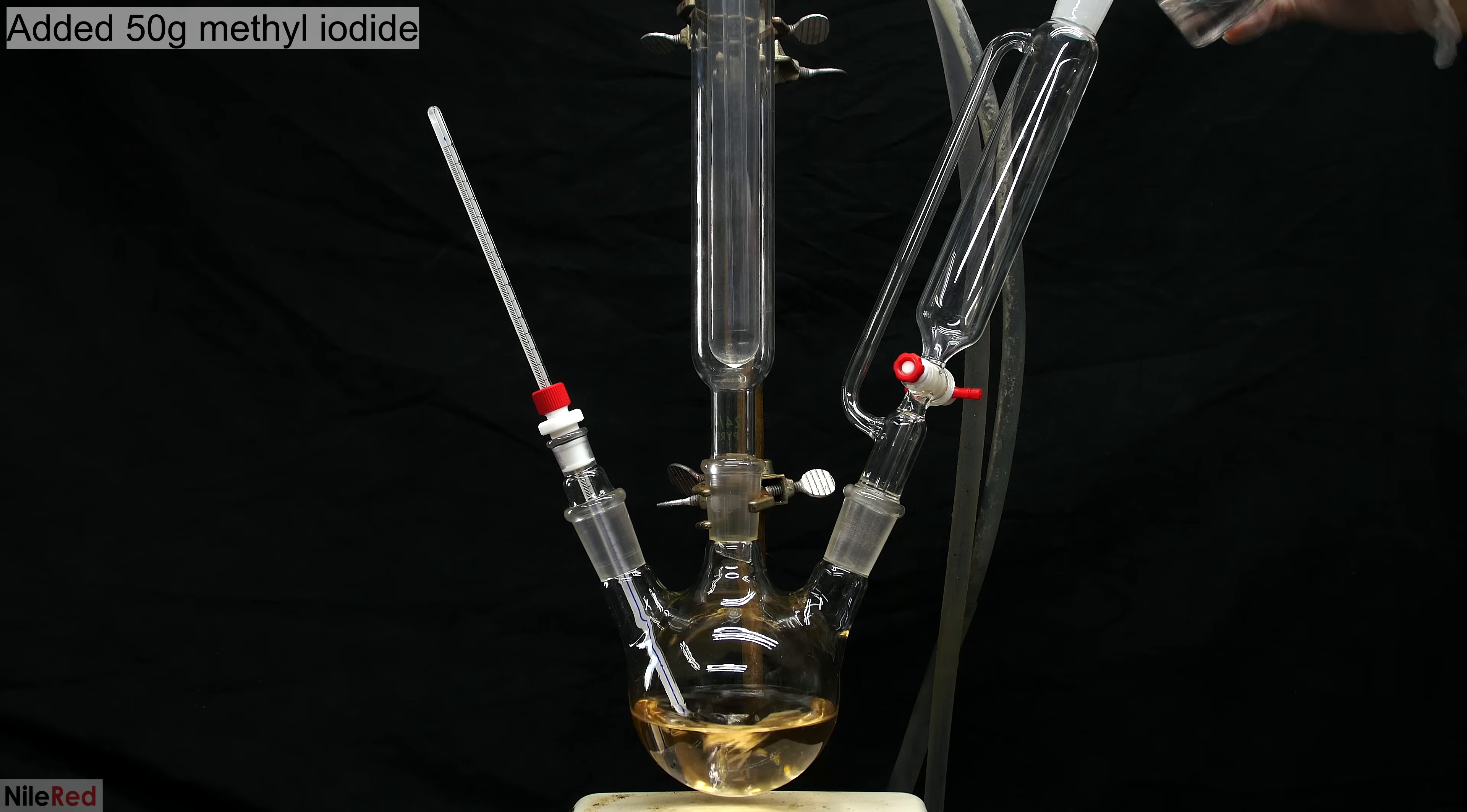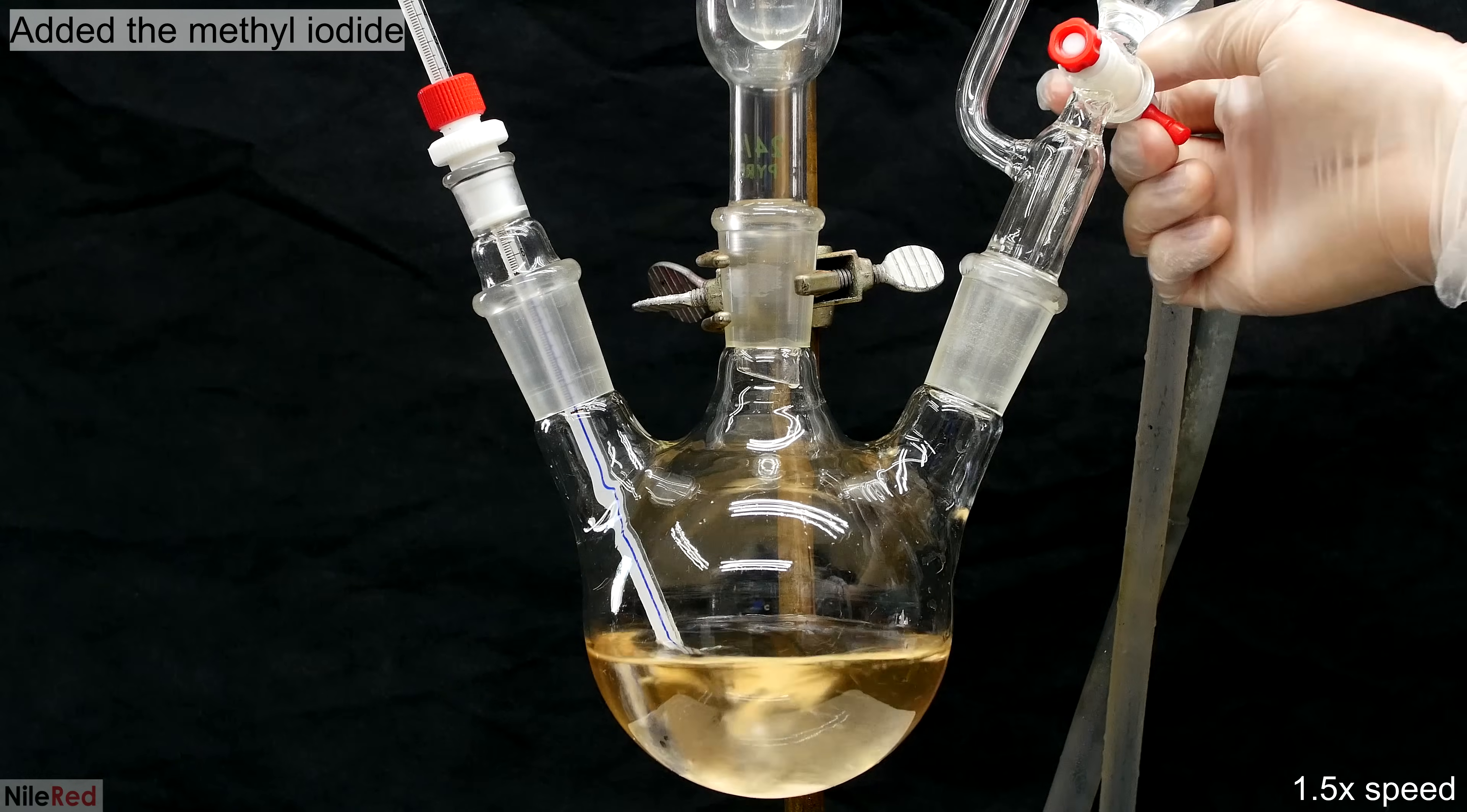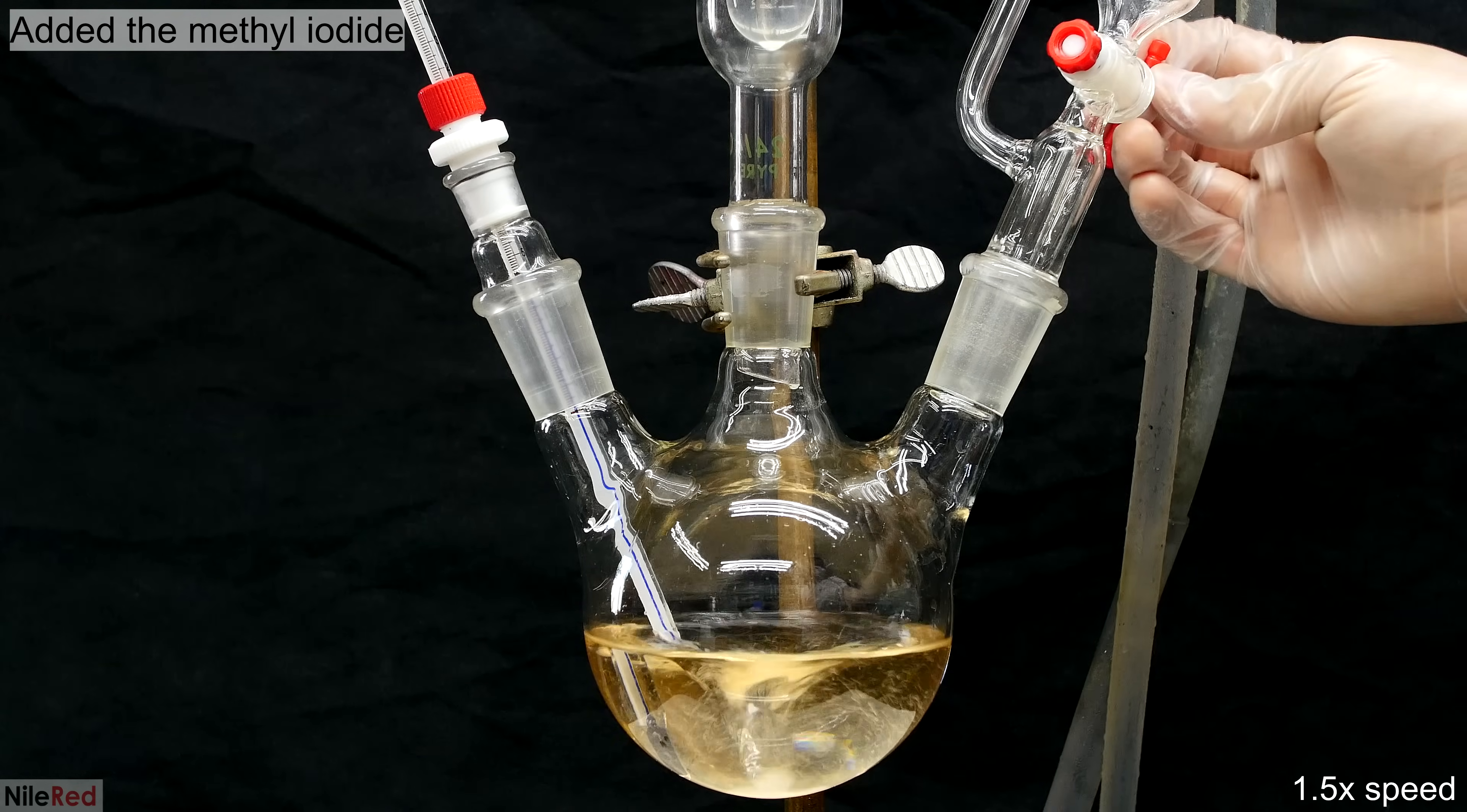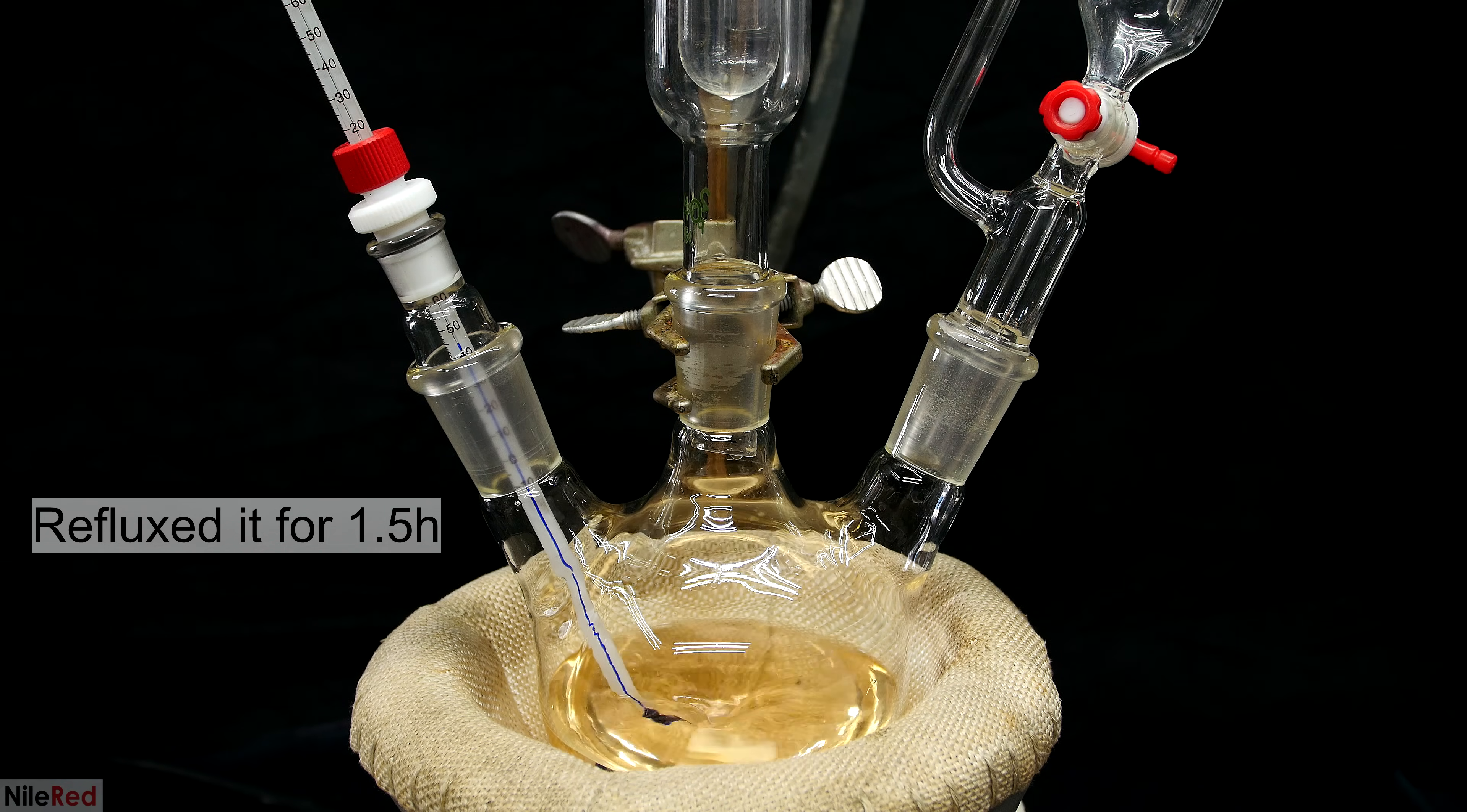The stopper is removed and it's replaced by an addition funnel, and to the addition funnel, I add 50 grams of methyl iodide. The addition funnel is opened and I start to add the methyl iodide. In the video made by Chemplayer, the temperature went up to around 70°C, but for me, I didn't really have any huge temperature increase. I'm honestly not exactly sure why Chemplayer's temperature went up and mine didn't, but if you guys have any ideas, I would love to hear them in the comments. After all of the methyl iodide had been added, I place a heating mantle below the flask and I bring things to a boil.